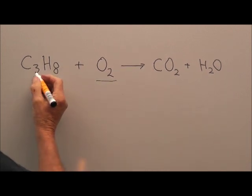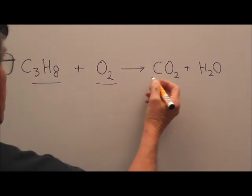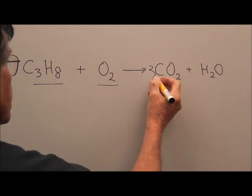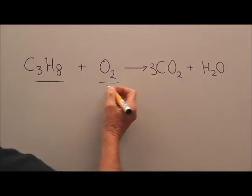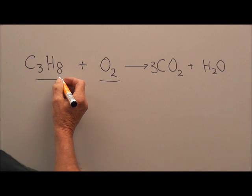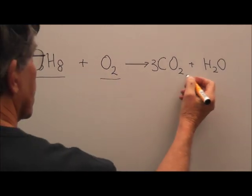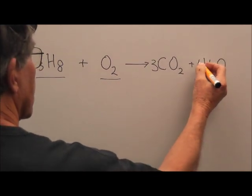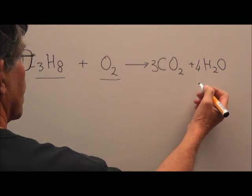If we look at this equation, you'll notice there are three carbons there and there's only one there. So we have to balance this equation to put a three in there. Now, if you look over here we've got eight hydrogens, and over here we only have two. So a four in there will sort that little problem out.